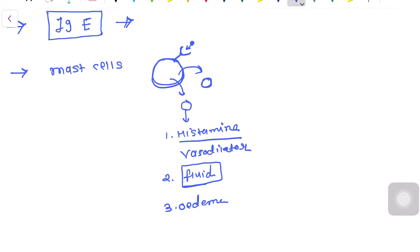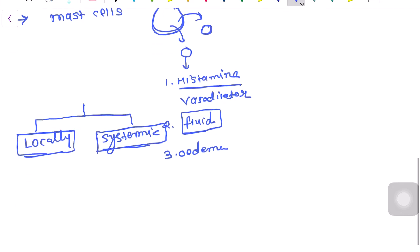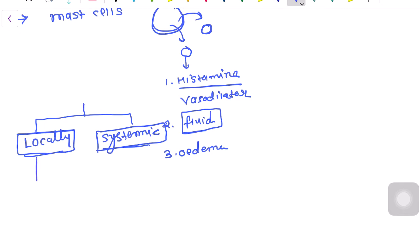This type of reaction can be of two types. One can occur in a local part, and another spreads all over the body, known as systemic type 1 hypersensitivity reaction. You must understand the examples of local and systemic hypersensitivity reactions.